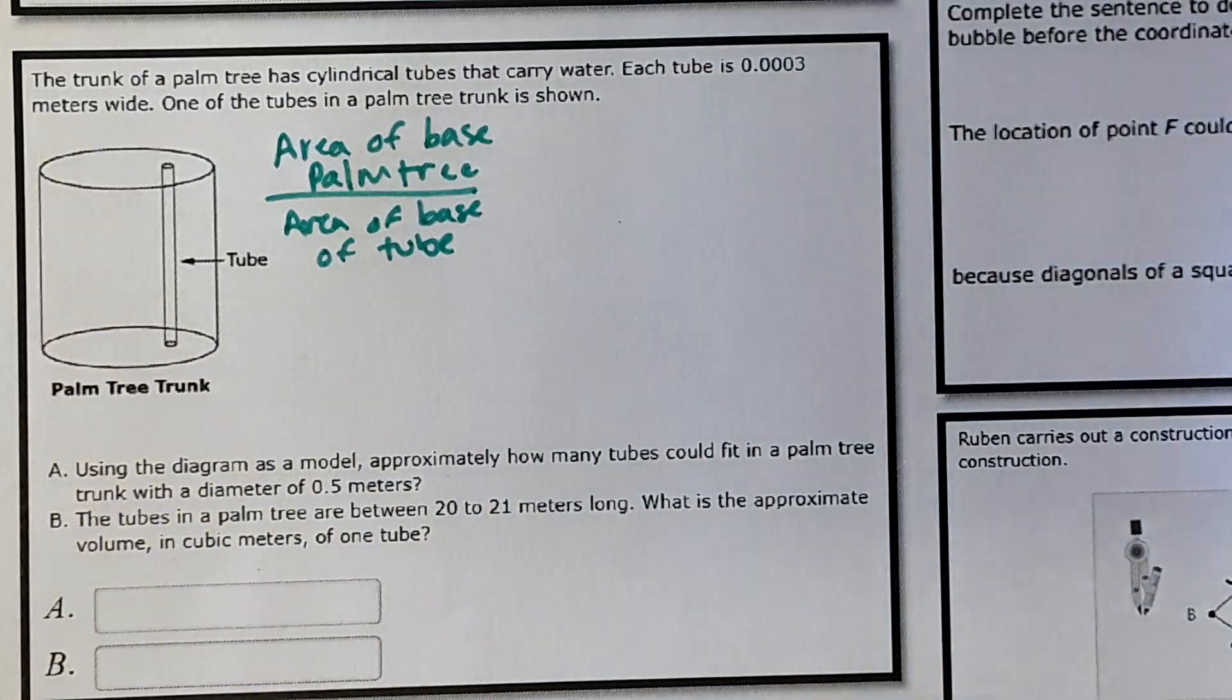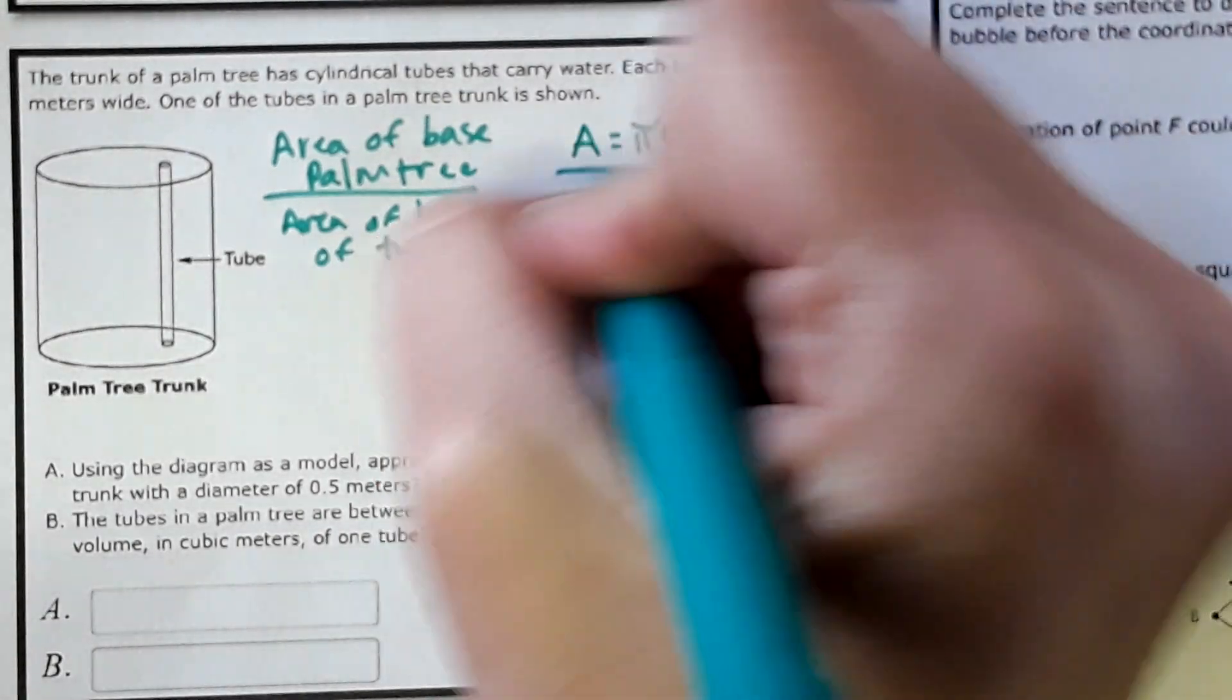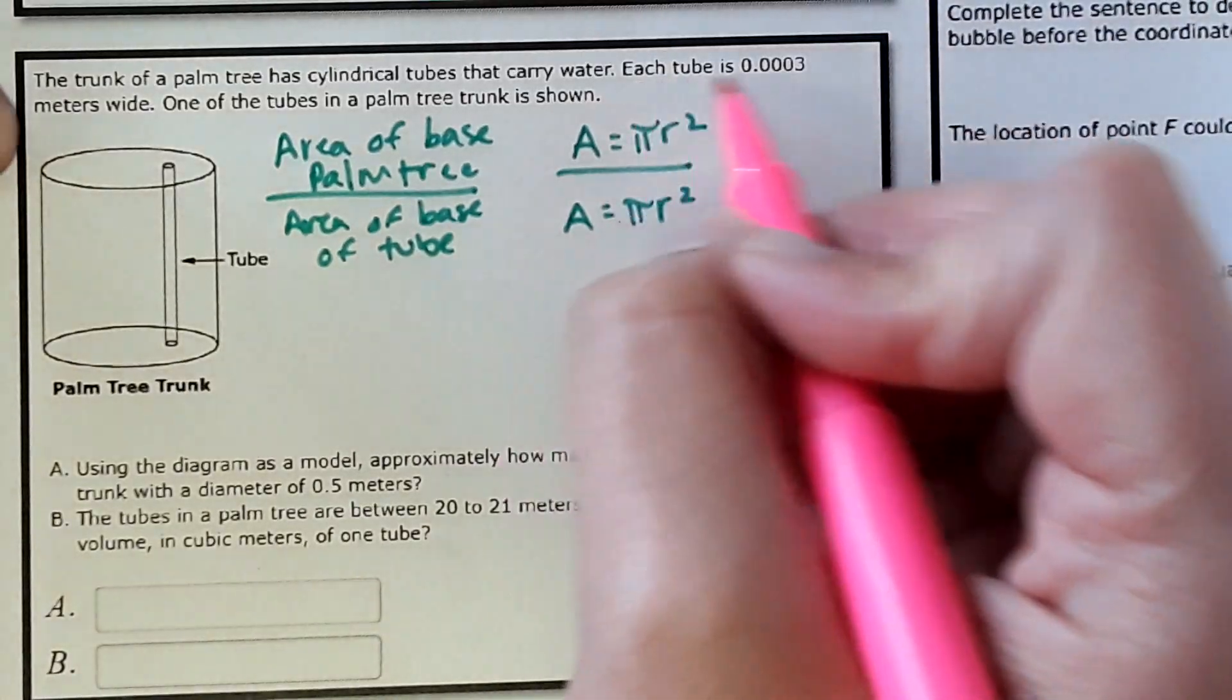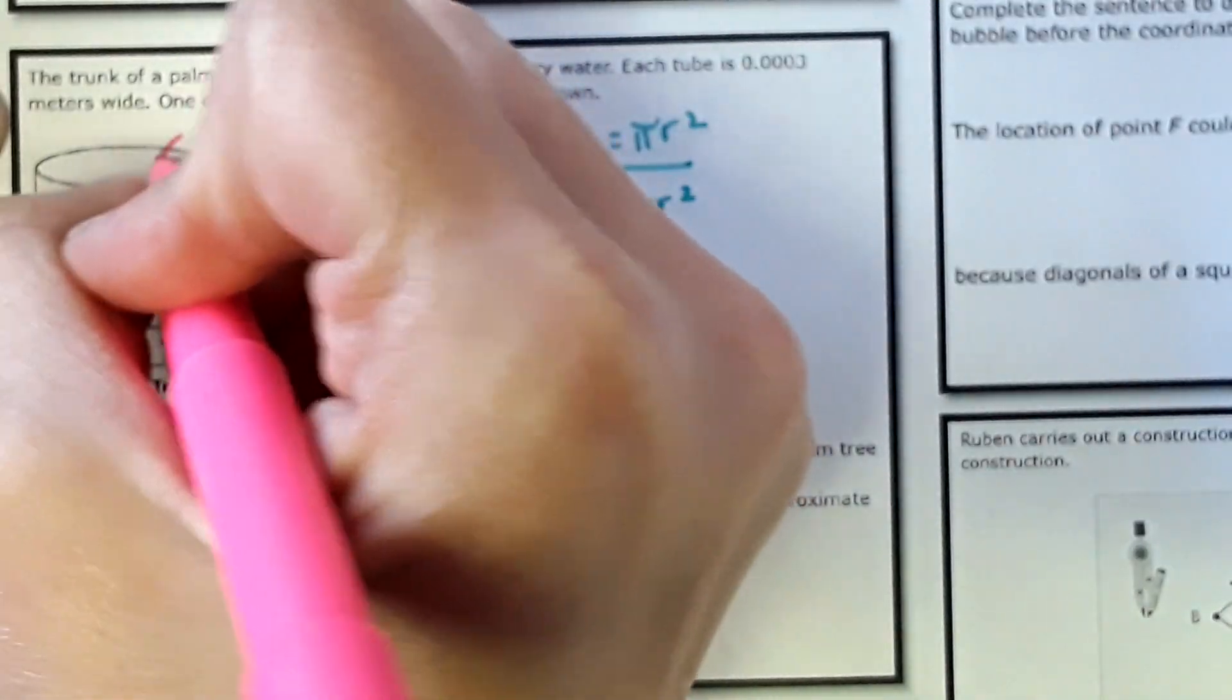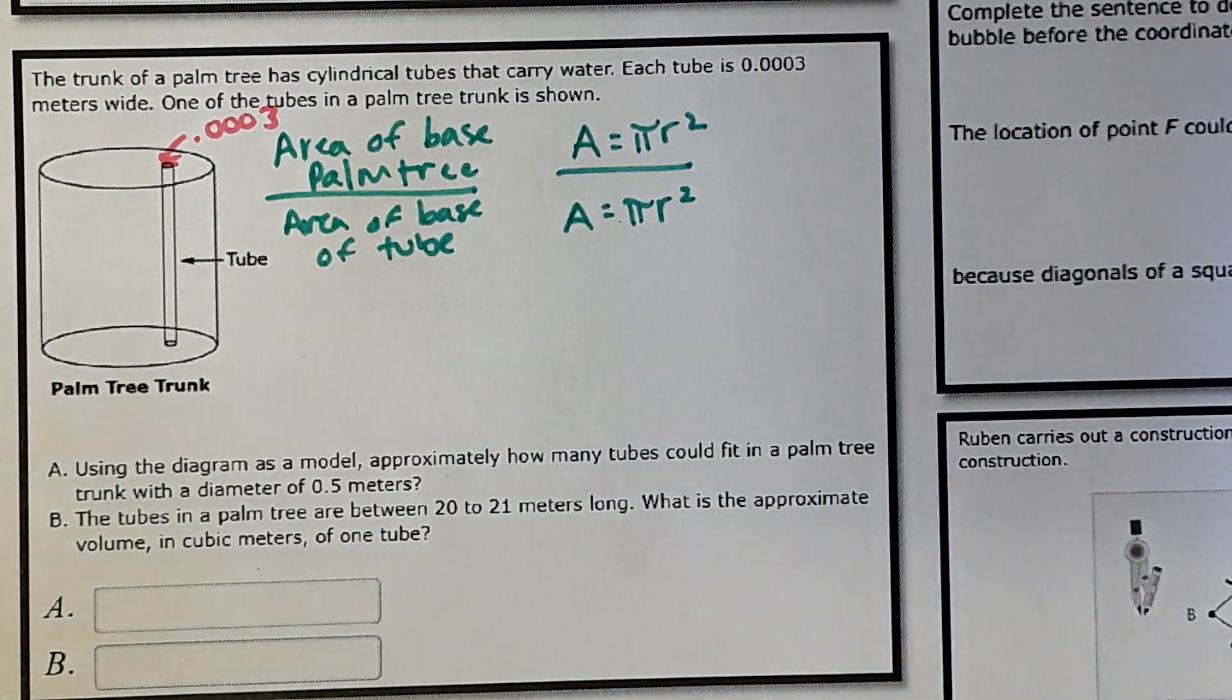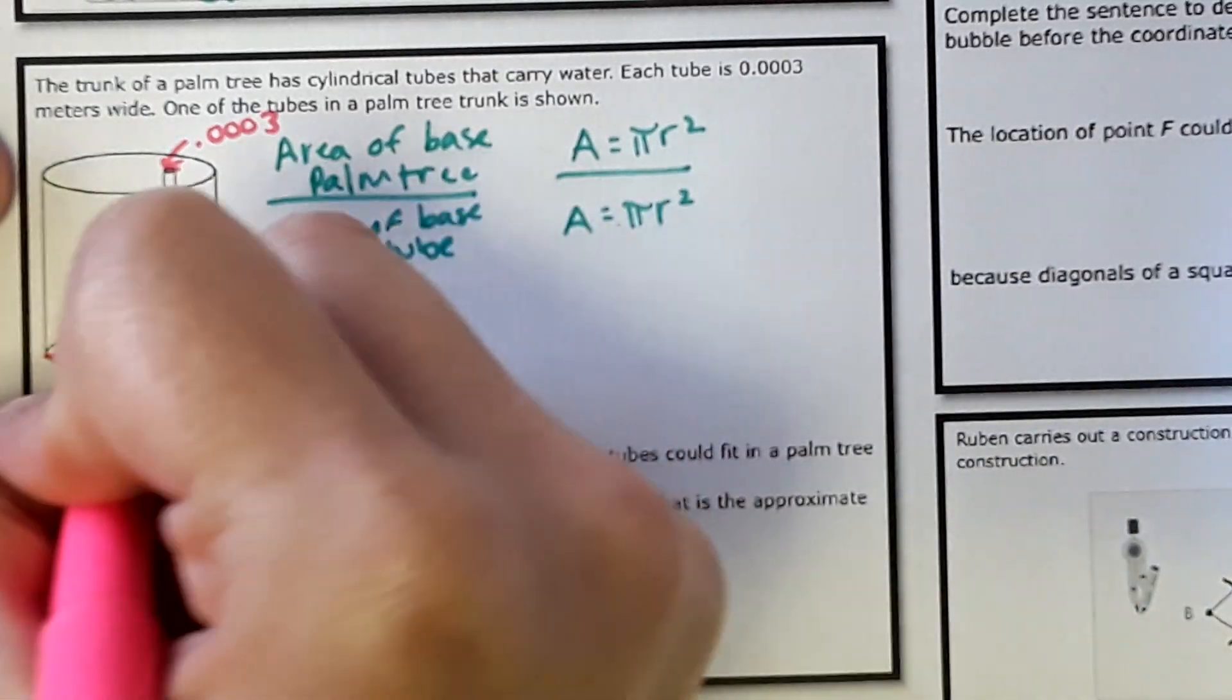And so we're dealing with circles or cylinders. So area of a circle is pi R squared. And that's going to be over the area of the base of the tube, again, pi R squared. Okay, in the problem, it says the tube is 0.0003 wide. So the diameter of this tube is 0.0003 meters. And the diameter of the trunk is 0.5 meters.